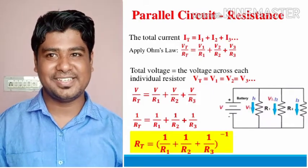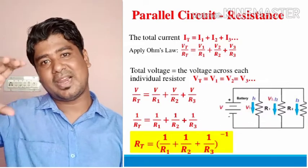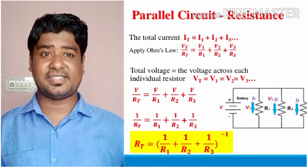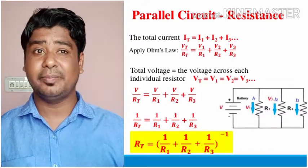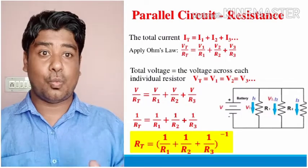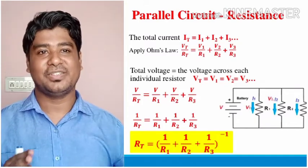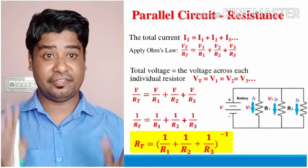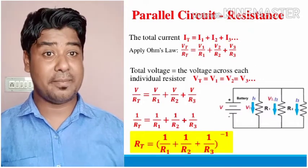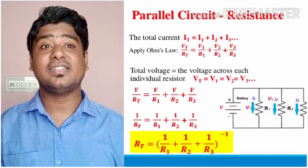Just as we did for series, let's interchange. Taking I = V/R and substituting, at the LHS we have I1 + I2 + I3, which equals V/R1 + V/R2 + V/R3. Taking V as common: V/R = V(1/R1 + 1/R2 + 1/R3). V is common on both sides — cancel it. So we get 1/R = 1/R1 + 1/R2 + 1/R3. This is the formula to find the combined resistance when resistors are connected in parallel.